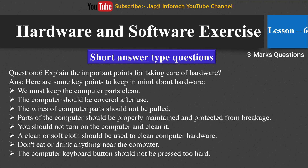The sixth question is: explain the important points for taking care of hardware. Here are some key points: we must keep the computer parts clean; the computer should be covered after use; the wires of computer parts should not be pulled; parts of the computer should be properly maintained and protected from breakage; you should not turn on the computer while cleaning it; a clean or soft cloth should be used to clean computer hardware; don't eat or drink anything near the computer; the computer keyboard buttons should not be pressed too hard.